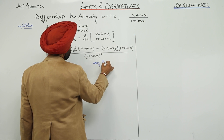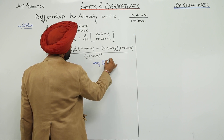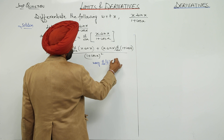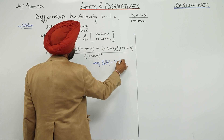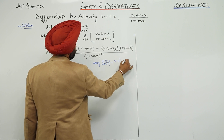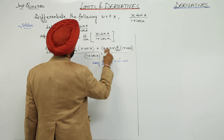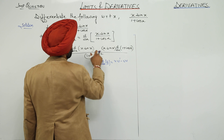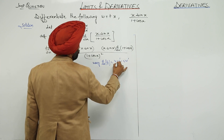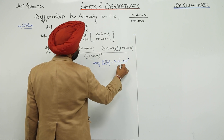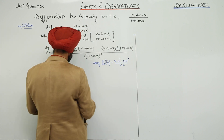Using d/dx of u·v, that is v·u-derivative minus u·v-derivative, upon v square.